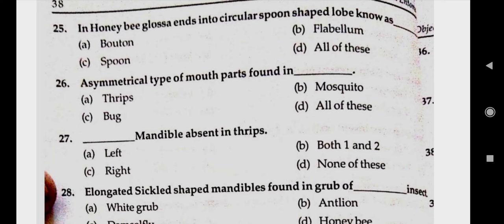Question number twenty-six: asymmetrical type of mouthparts found in thrips. Question number twenty-seven: dash mandible absent in thrips — right mandibles. Answer C.